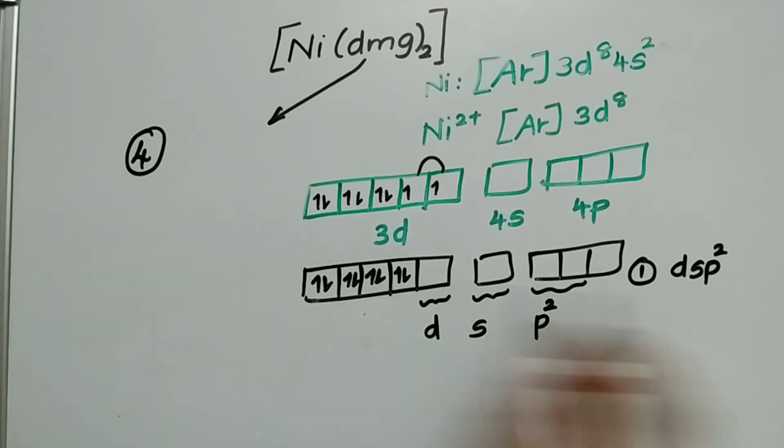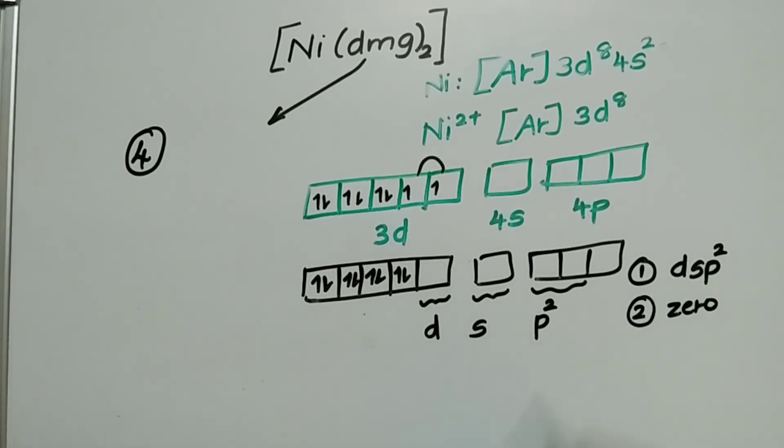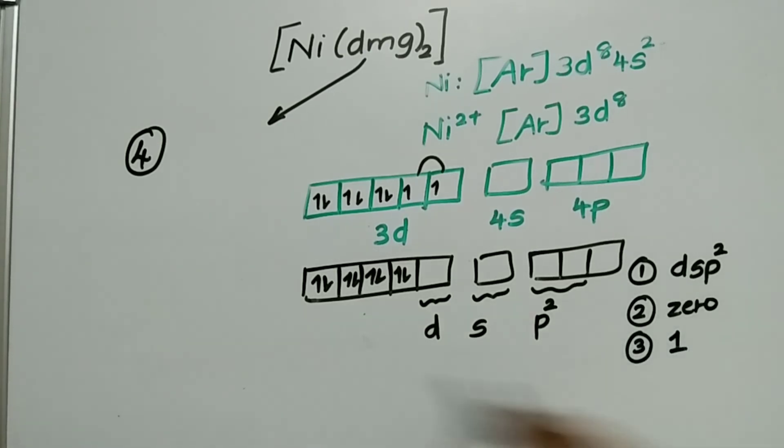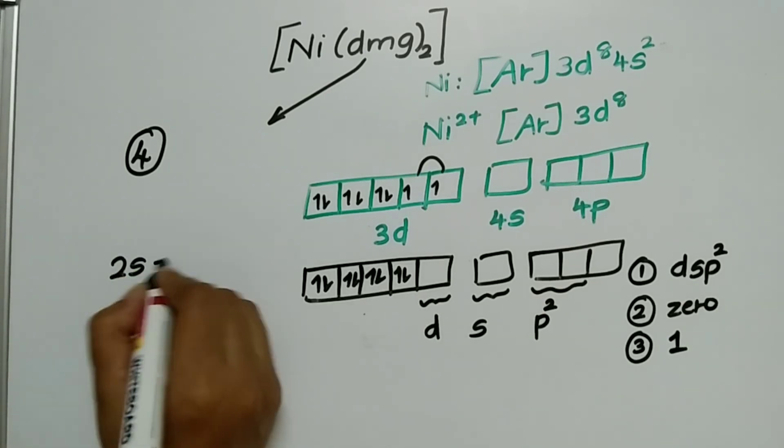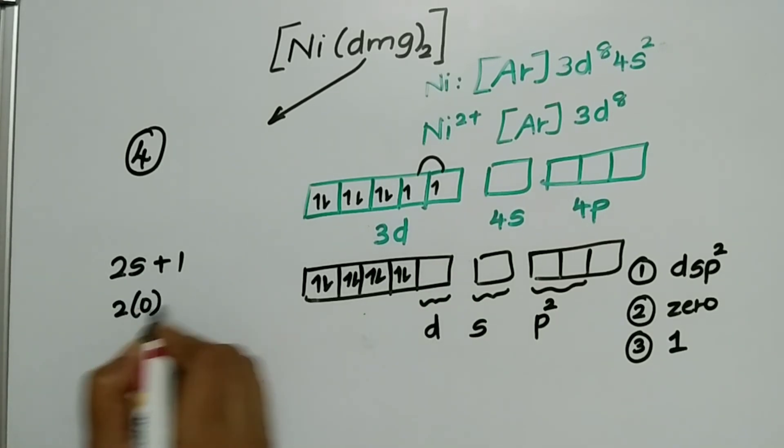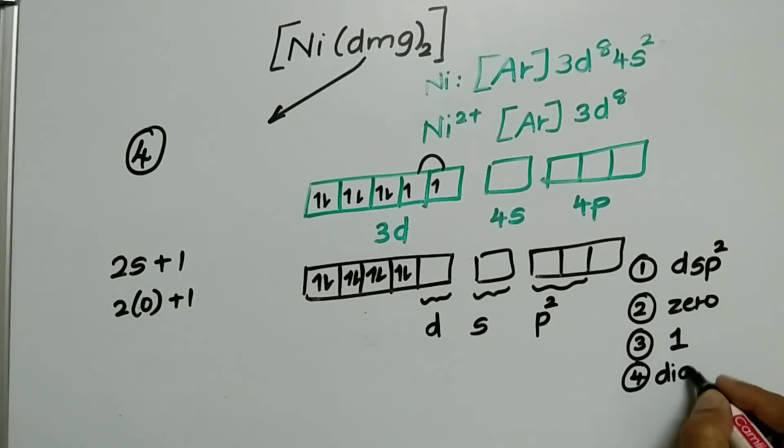What is the value of magnetic moment here? 0, because no unpaired electrons are there or the electrons are paired up. Spin multiplicity it is 1. Spin multiplicity it is 1. If you want I will just do it, 2s plus 1 is the formula for spin multiplicity, no unpaired electron, so s value is 0 plus 1 we get 1. Fourth one, it is diamagnetic in nature because all the electrons are paired up.